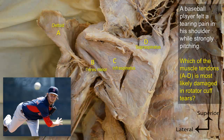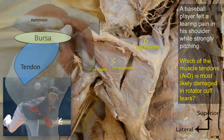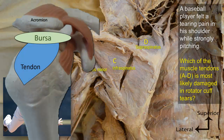Lesions of the cuff are a common cause of pain in the shoulder region. During abduction, supraspinatus initiates abduction. Its tendon passes beneath the coracoacromial ligament on its way to be inserted into the superior facet on the greater tubercle of the humerus. Thus, this tendon of supraspinatus is exposed to friction against the acromion process and the coracoacromial arch.